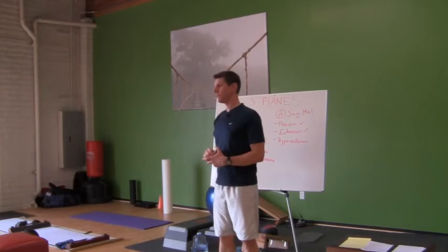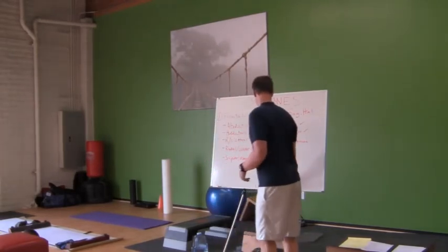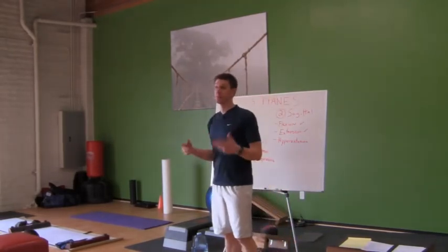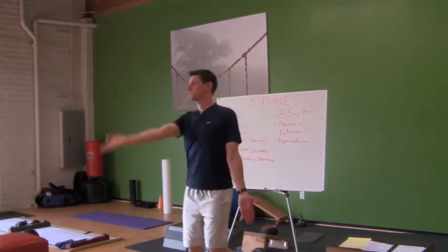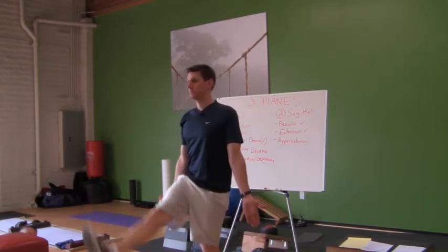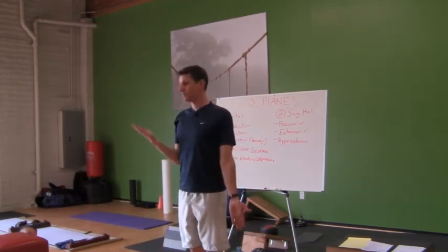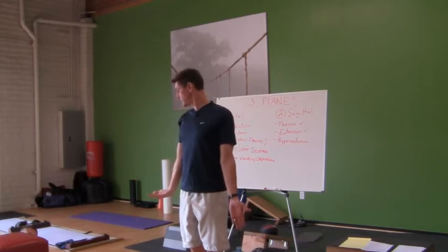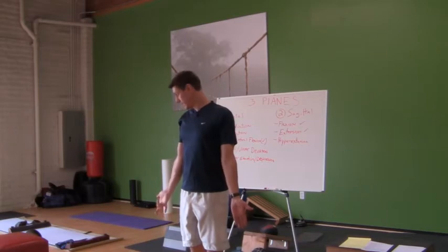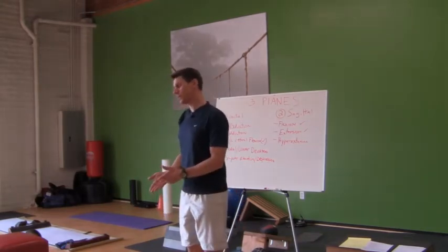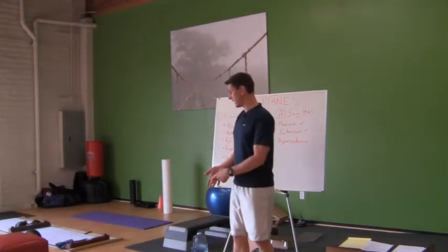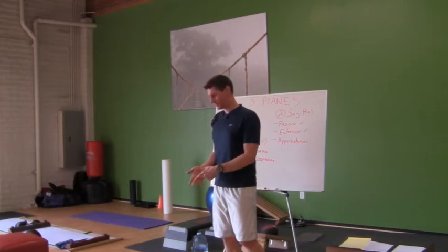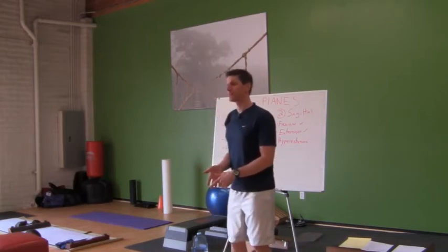So where can flexion, extension, and hyperextension occur? Elbow, knee, wrist, fingers. You can get it at the metacarpal phalangeal joint, and also at the finger joints — the proximal interphalangeal joint, also known as PIP, or the distal interphalangeal joint, called the DIP.